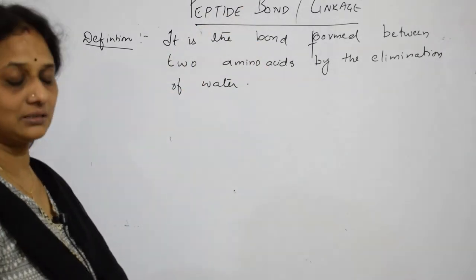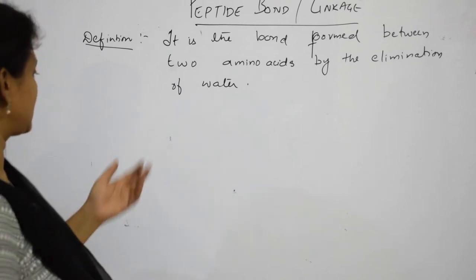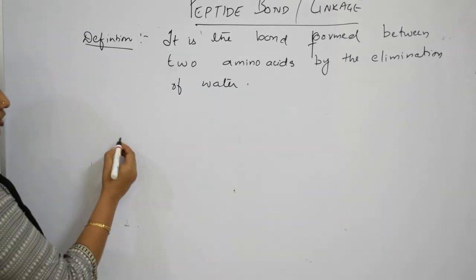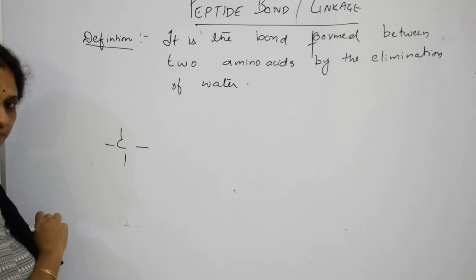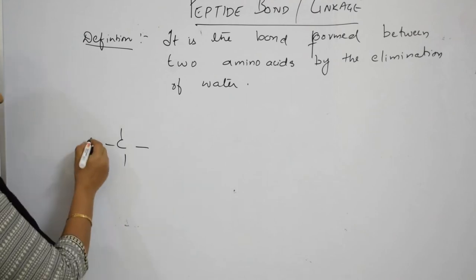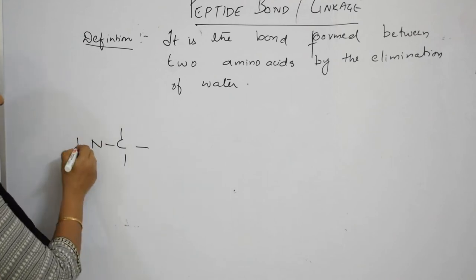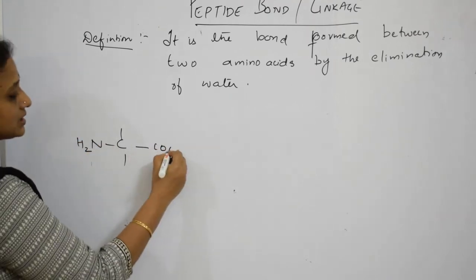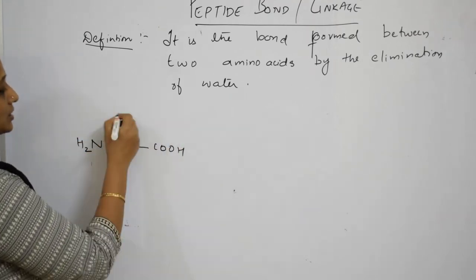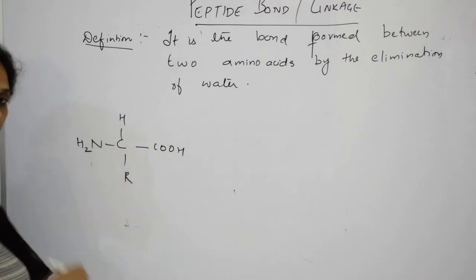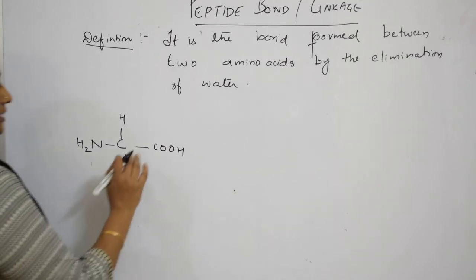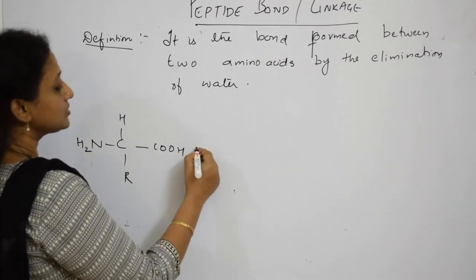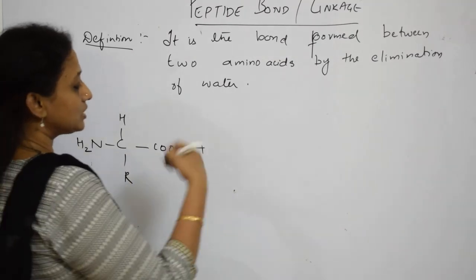Now let me explain what it is. An amino acid is basically tetravalent — it has an amino terminal and a carboxylic terminal, with H and R groups. R can represent any of the 20 amino acids. Now this amino acid is going to combine with one more amino acid.